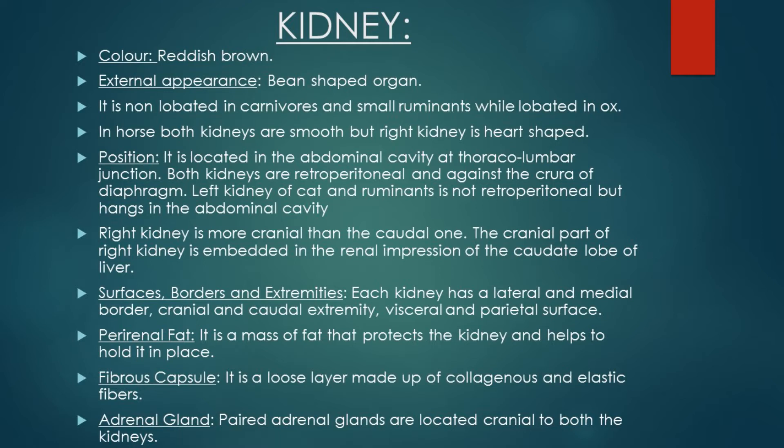Both kidneys are retroperitoneal and against the crura of the diaphragm. Retroperitoneal means that both kidneys are present behind the peritoneum, so kidneys are not covered by the peritoneal cavity. They are present against the crura of the diaphragm. A crus is a tendinous structure that extends below the diaphragm to the vertebral column. So both kidneys lie ventral to the crura of the diaphragm.